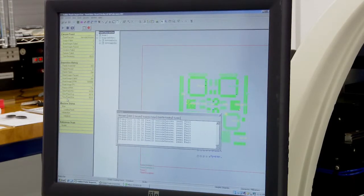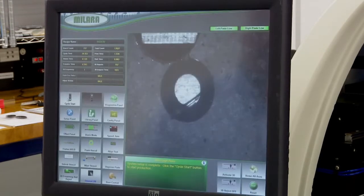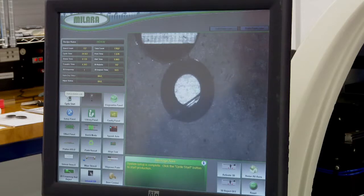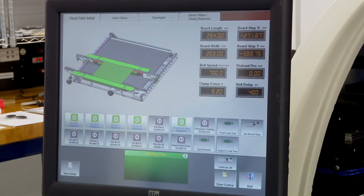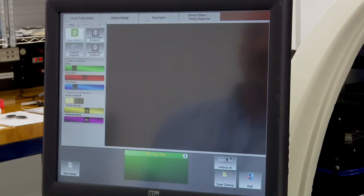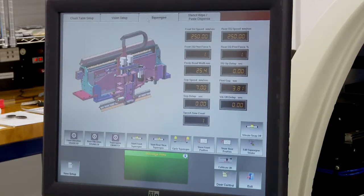There are various setup screens that are used on the printer side. One is for setting up the transport track system. Next would be the vision system. Next would be the printhead squeegee system. And then, over to the bottom side, stencil wiper and paste dispenser.